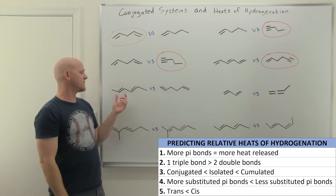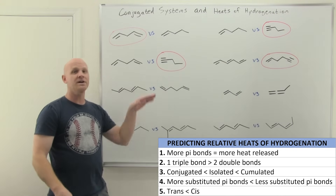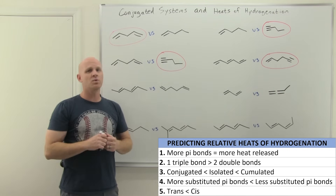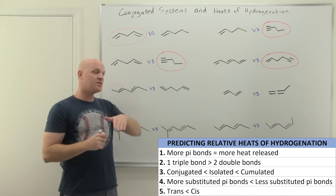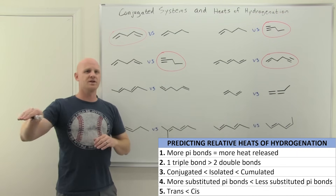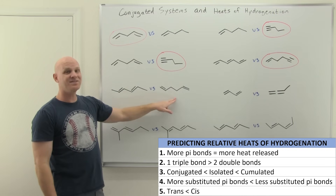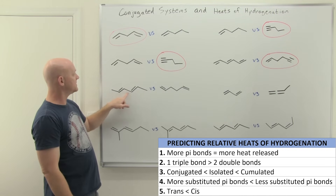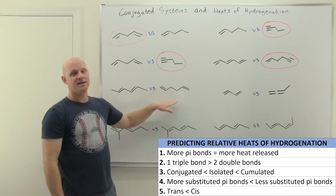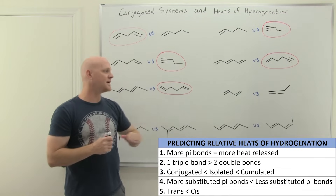Moving to the next example: two pi bonds versus two pi bonds — rule one doesn't help. No alkynes — rule two doesn't help. But we have a conjugated system on the left, where there's just a single sigma bond between the two pi bonds, and an isolated system on the right, where there's more than one sigma bond between the pi bonds. The isolated system starts out less stable — higher energy — so it has more energy to release and therefore a higher heat of hydrogenation.